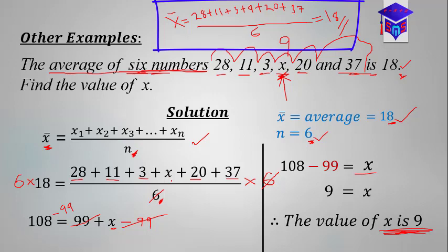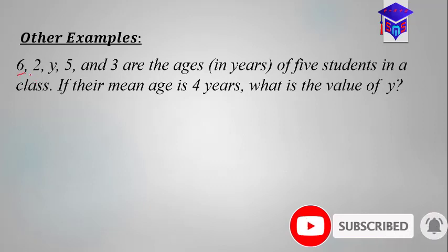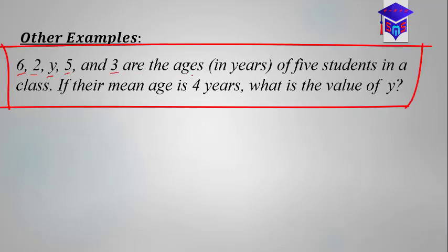If there are any questions or comments, please leave them in the comment section. Here is a similar one to try: 6, 2, y, 5, and 3 are the ages in years of five students in a class. If their mean age is 4 years, what is the value of y? Just like the first one we did — pause the video and try it. We'll compare our answers in a few seconds.